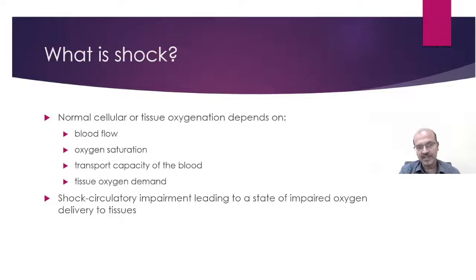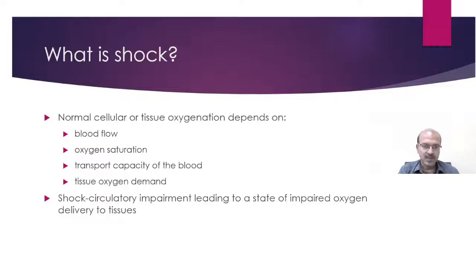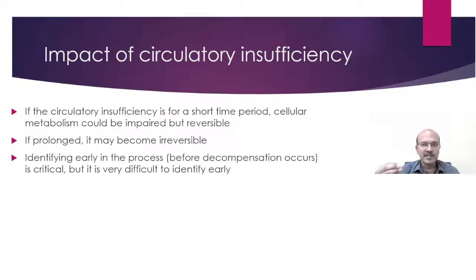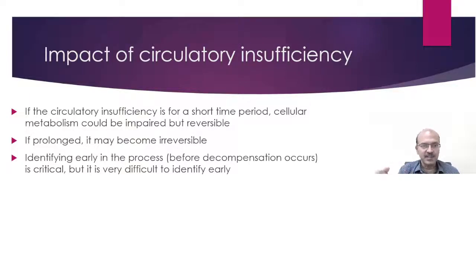Shock is a condition where there is circulatory impairment leading to a state of impaired oxygen delivery to the tissues. We have different causes for shock depending on the age group and the situation we deal with, and the approach to shock depends on the underlying cause. If circulatory insufficiency is for a short time period, there is a reserve mechanism — the cellular metabolism could be impaired but this is reversible. However, if it is prolonged, it becomes irreversible shock.